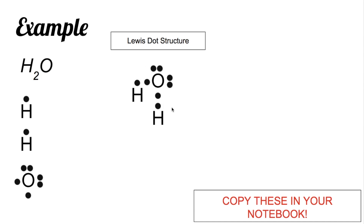Oxygen now satisfies the octet rule, so we say oxygen is now stable. This hydrogen atom is sharing one electron with oxygen, so it now has 1 and 2 — two valence electrons in its outermost shell, making it stable. The other hydrogen atom also shares one electron with oxygen, giving it 1 and 2 as well. So all atoms are now stable.